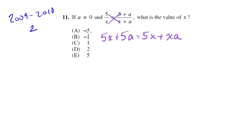Well notice what happens here. We've got a 5x on both sides. They can go. So we are left with 5a = xa, and we can just by inspection see that x is going to have to equal 5.